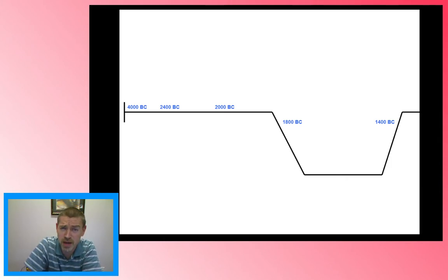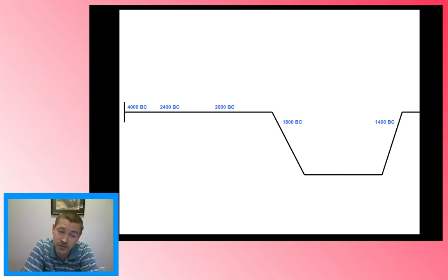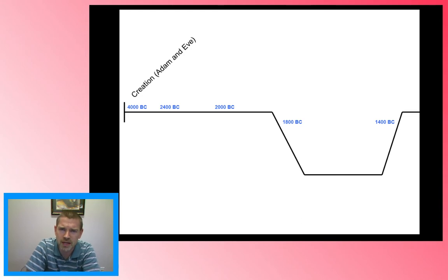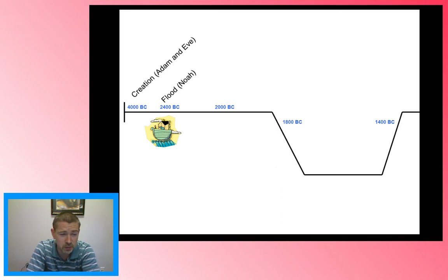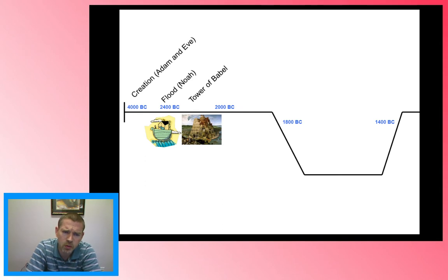Start with me way back around about 4,000 years before Christ was born — 4,000 BC. This is roughly when we may mark the time of creation with Adam and Eve. We'll start back there in Genesis chapters 1, 2, and 3. Then Genesis chapters 6 through 9, we have the story of Noah and the flood. The Tower of Babel comes shortly after that, coming to the end of Genesis 10 and 11.